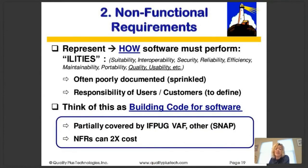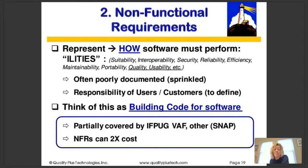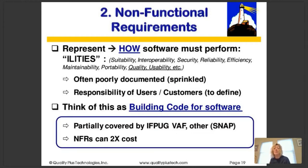Next we have non-functional requirements. These are not functional requirements — they're other requirements. They describe how the software must perform in terms of the 'ilities': suitability, interoperability, security, reliability, efficiency, maintainability, portability, quality, and usability. In agile development these are typically poorly documented — almost like sprinkles on a cake. They are the responsibility of users to define and are really like a building code for software. For example, if the software must be encrypted, must have 24×7 access, must be portable, or must work on different hardware and software platforms.